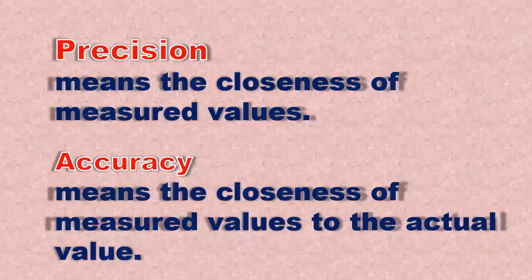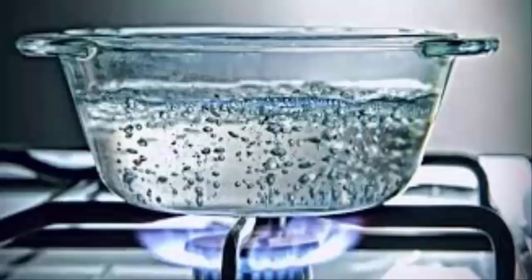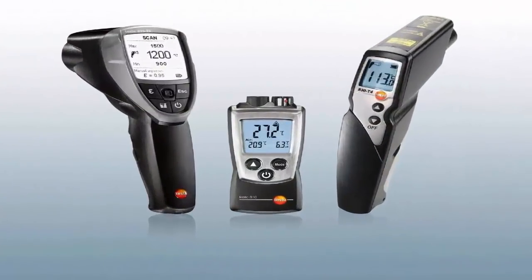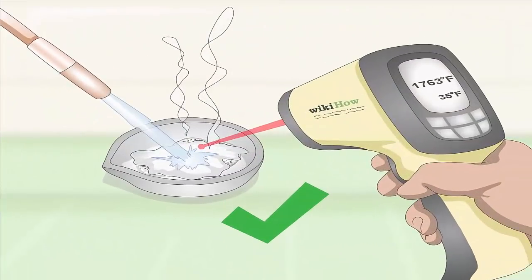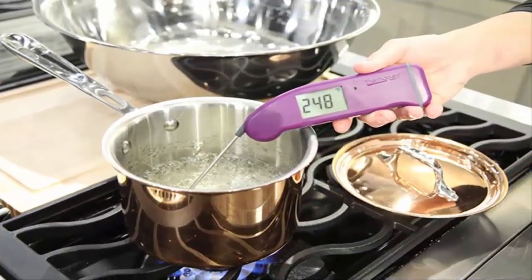I hope the example I am going to present here will provide you a better understanding. As we know, the boiling point of water is 100 degrees centigrade. Suppose I ask you to buy three digital thermometers of different brands. I give one thermometer to each of the three students and ask them to take three values of boiling water with an interval of five minutes during each reading. After getting these values, we place them in the given table as shown.